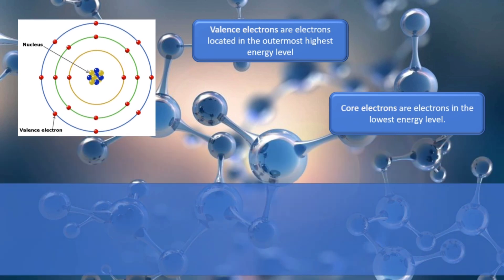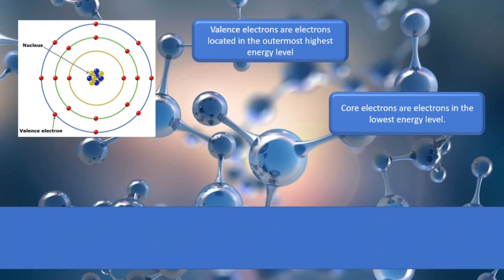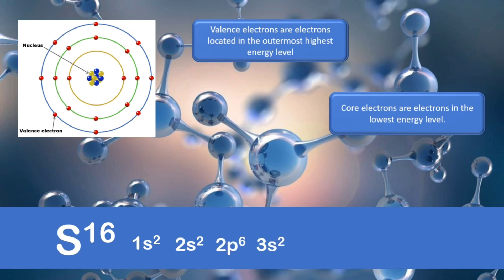Let's have an example. Sulfur with atomic number 16. The SPDF notation for sulfur is 1s2, 2s2, 2p6, 3s2, and 3p4.